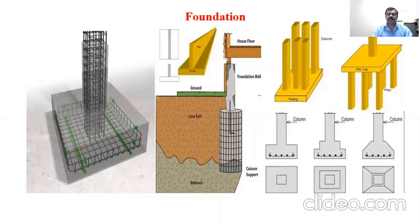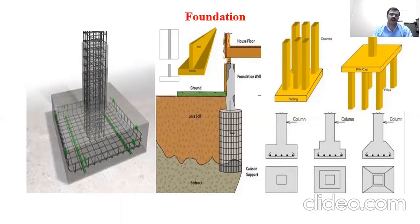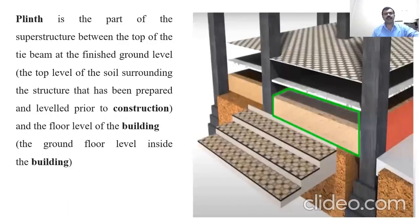Uniform settlement means the building settles uniformly. Differential settlement is different. Foundation is very important because the whole structure load — that is, the superstructure — is directly transferred through the foundation. The superstructure is the part between the top of the foundation and the finished ground level, consisting of floors and other elements.